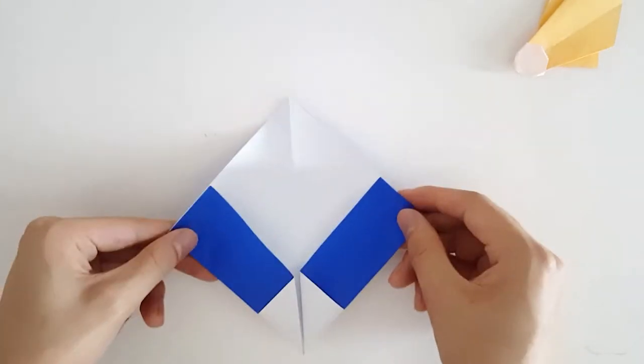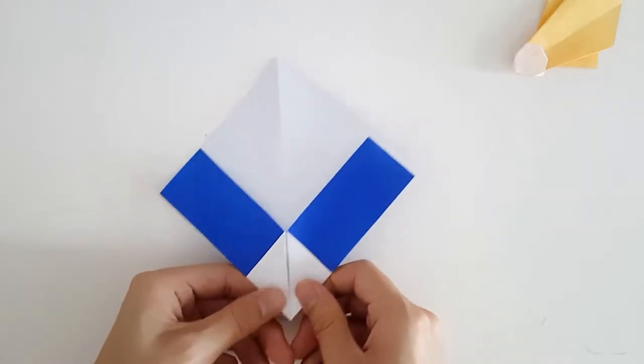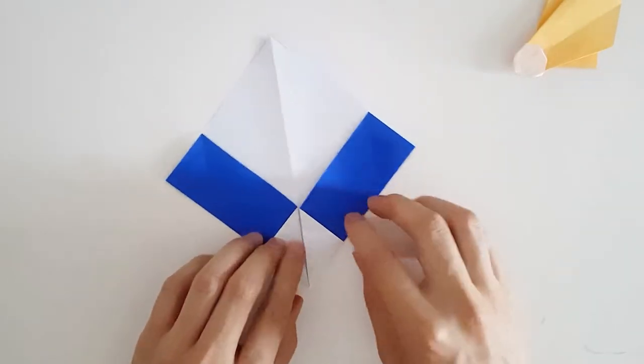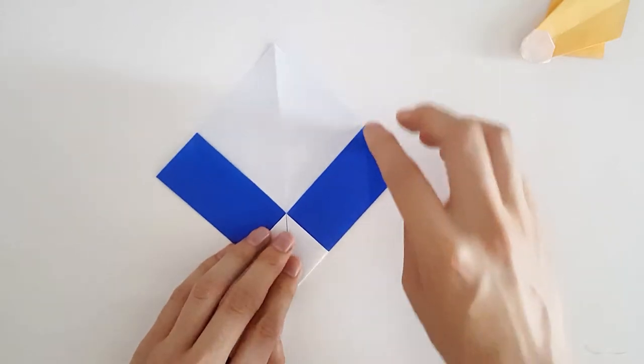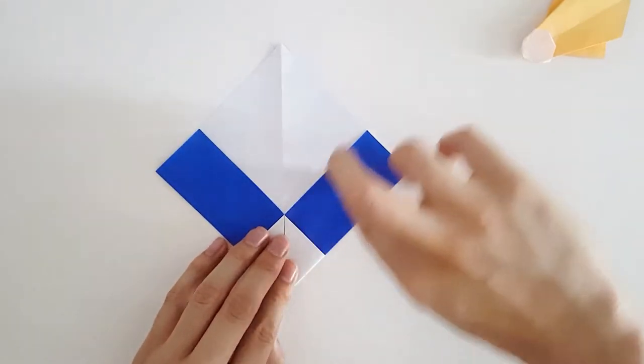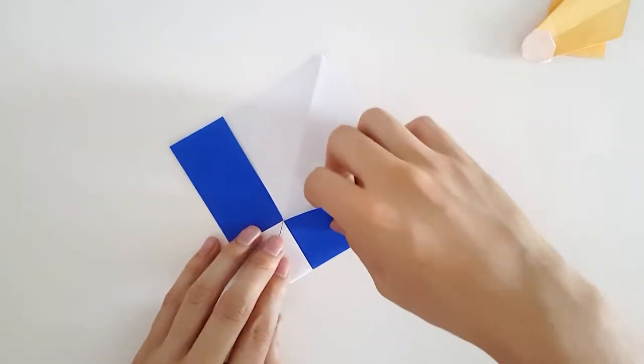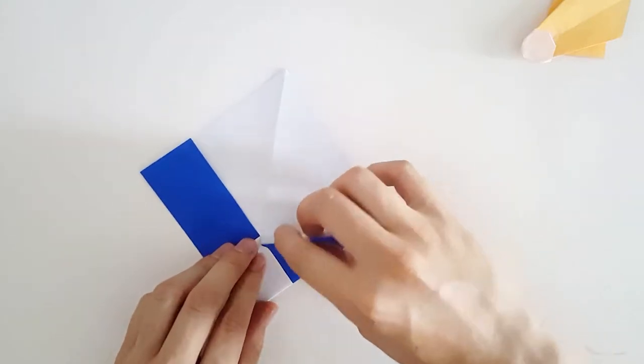Now what we want to do is fold the flap behind the smaller square to align with the edges of the crease. See this flap here? That's the angle we're going to make it at, so not that way.